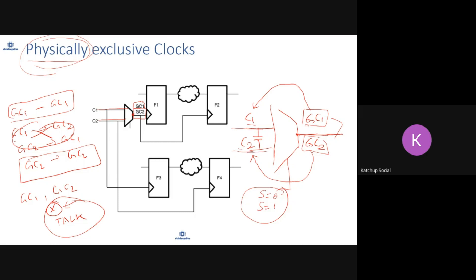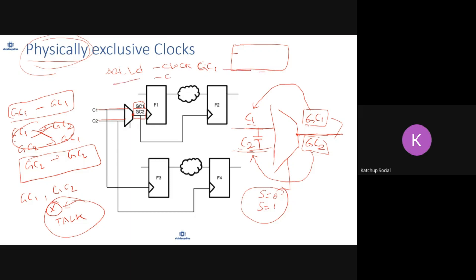A student asks how to add IO constraints like input and output delay when there are two clocks — C1, C2, GC1, GC2 — involved. You use the set_input_delay command with the clock option. Give one set_input_delay command with clock GC1 and the desired delay value, then another set_input_delay command with clock GC2 and its delay value. There is also an option called add_delay, and using add_delay on the same input port you can add delays with respect to however many clocks you want.